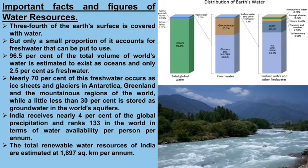For us, there is 2.5% fresh water available for use. Out of that 2.5%, there is 68.6% in the form of glaciers and ice caps, and groundwater constitutes 30.1%. These two percentages cannot be directly used.